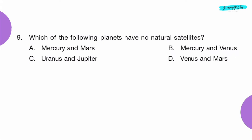Question 9: Which of the following planets have no natural satellites? Option B: Mercury and Venus.